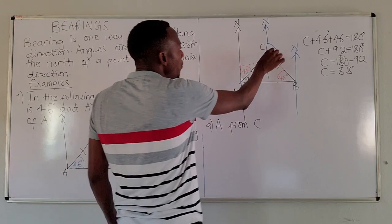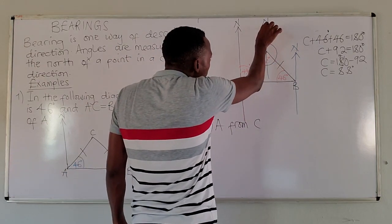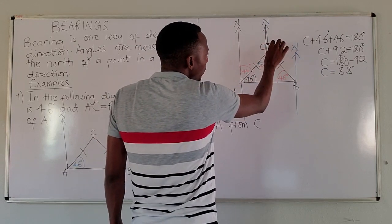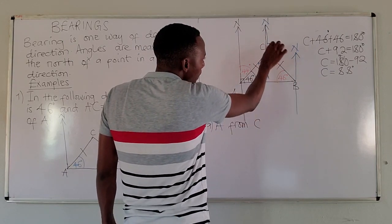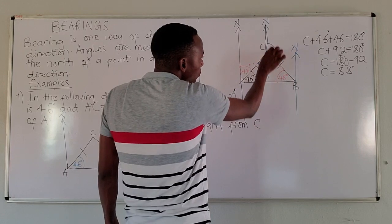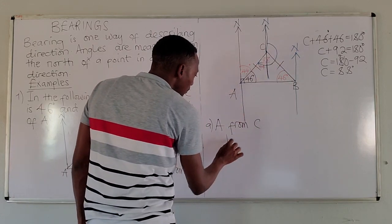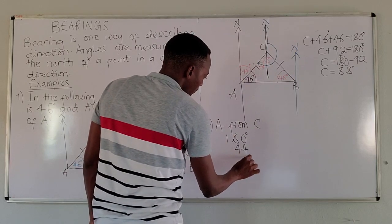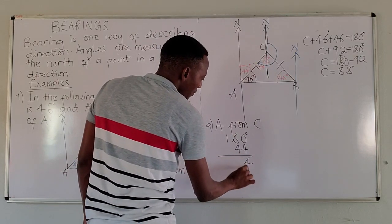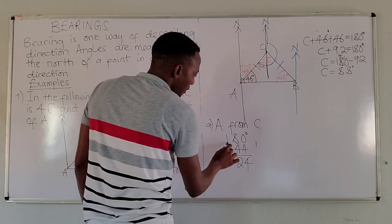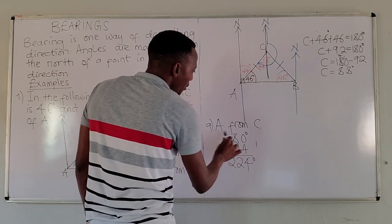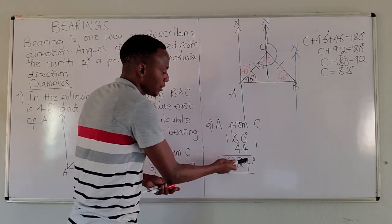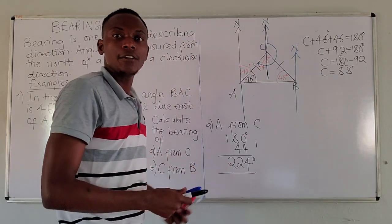The bearing of A from C: remember this is a straight line. This part and this other part together equal 180. So we are going to do 180 degrees plus 44. This gives us 224. So the bearing of A from C is 224 degrees, which is already a three-digit figure.